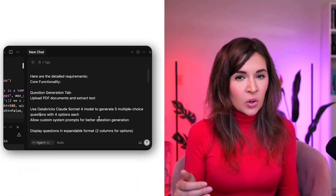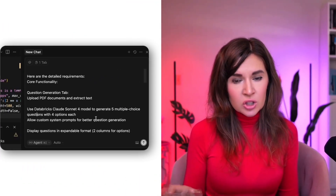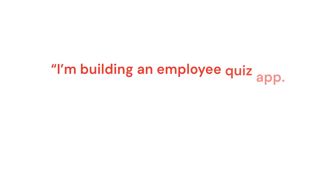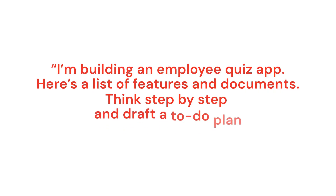Next, describe the goal and requirements and ask the model to generate a plan. For example: 'I am building an employee quiz app. Here is a list of features and documents. Think step by step and draft a to-do plan and save it in my repo.' Once the model lays out a to-do list, you can review and edit it. That plan becomes your shared blueprint and keeps the agents on track.